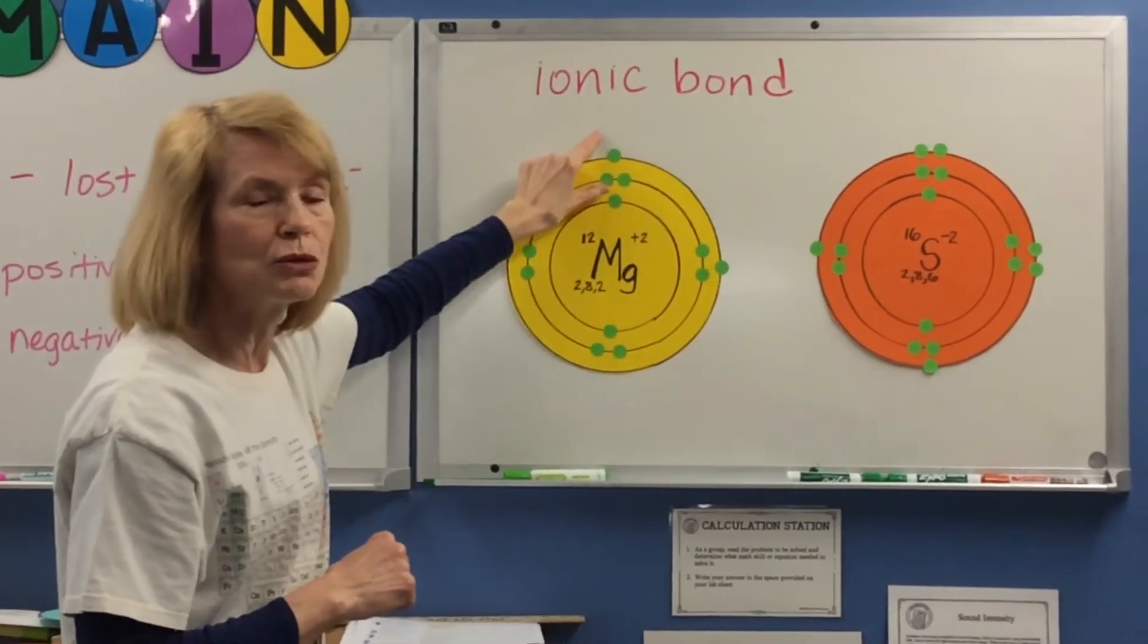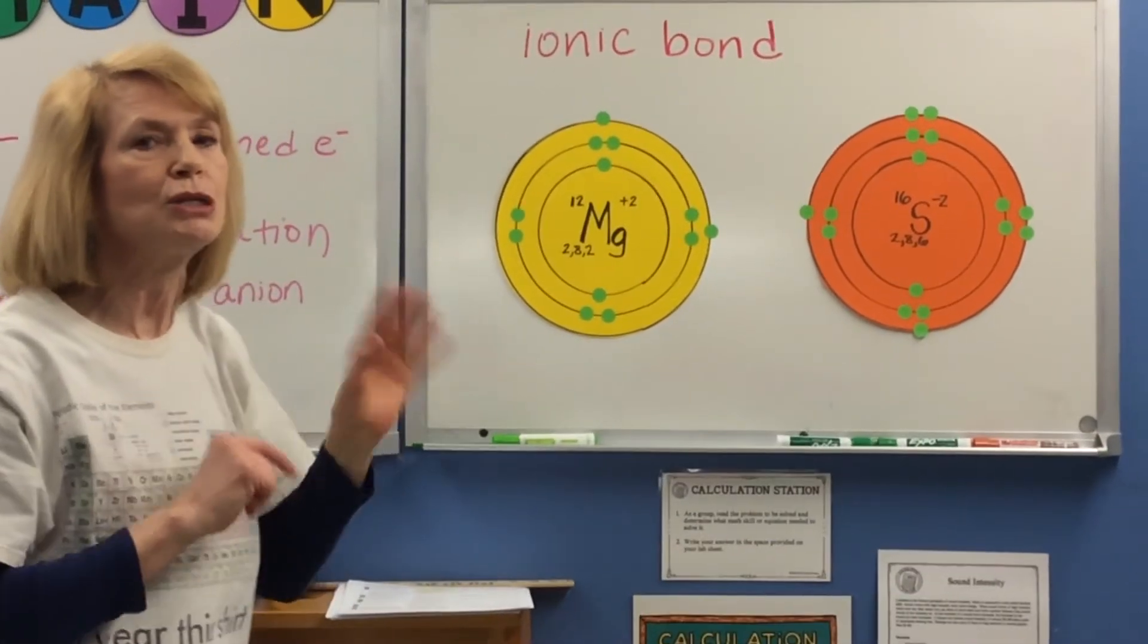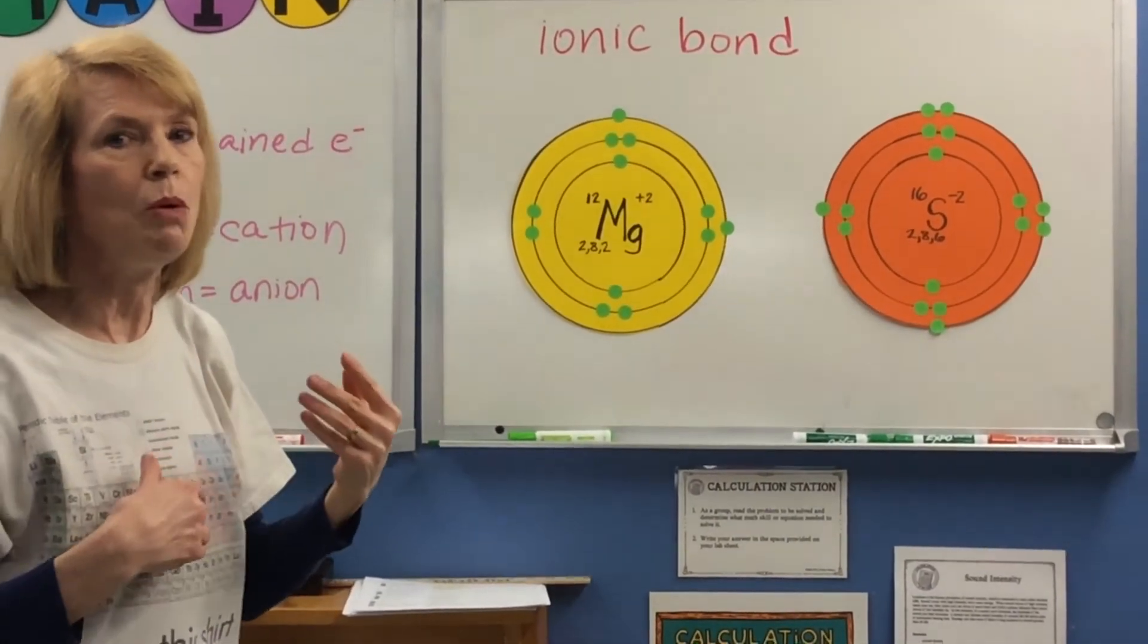Magnesium has these two electrons. It's easier for magnesium to get rid of these two than to gain 6 more.